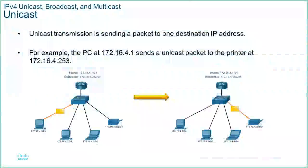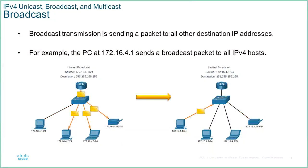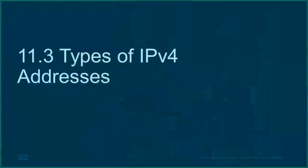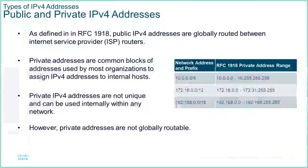Quick recap: a unicast is when I send a packet from one source to one destination. A broadcast is where I send it from one source to all other devices on that network segment. A multicast is where I send it to multiple devices but not all devices. Now that we've done that recap, let's get into private and public address spaces.